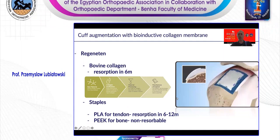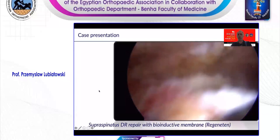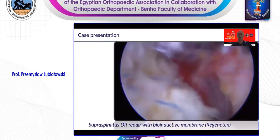Now I'll show the case: a 66-year-old male with traumatic supraspinatus tear, but also some signs of degeneration as you can see on the MRI, with osteophyte formation and thinning of the tendon. This patient had a lot of pain, limited active range of motion, weakness with positive Jobe test, but no external rotation weakness. We performed a double row repair, but some part of the footprint was still left uncovered. That's why we decided to use the membrane. You can see the delivery device delivering the membrane inside the subacromial space.